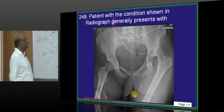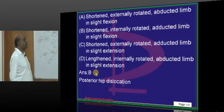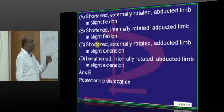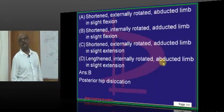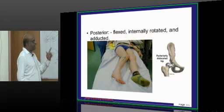Then in this radiograph what you can see is a displaced fracture. How does it present? Posterior hip dislocation—internal rotation, adducted limb, shortening in slight flexion. So flexed, internally rotated, adducted limb is the one which you see in posterior dislocation.